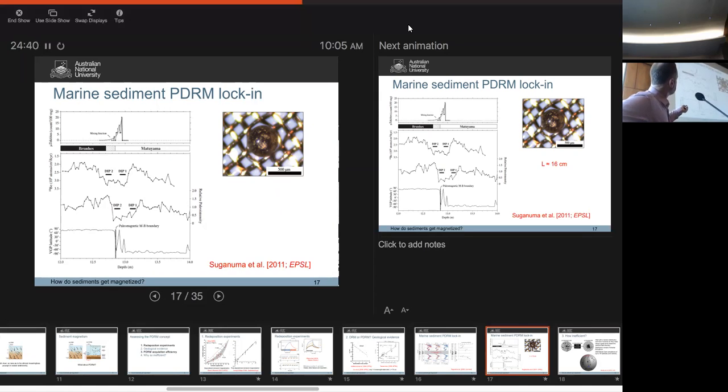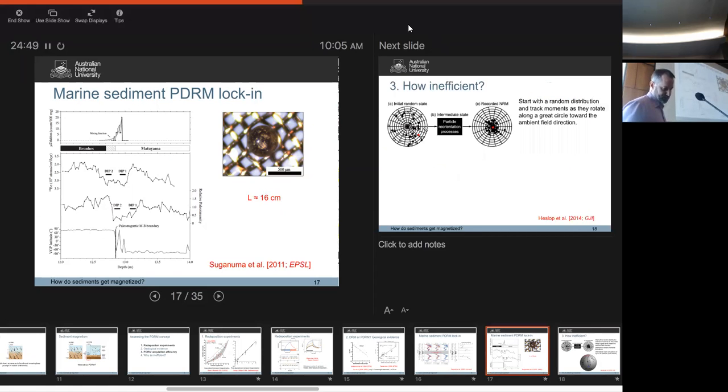What you can see is that these two records are offset from each other. The argument would be that this is because of the lock-in depth. And when you put a filter into it, you get a lock-in depth of 16 centimeters out of it. Interestingly, the best-fit filter is a Gaussian one. That's a microtektite, by the way.